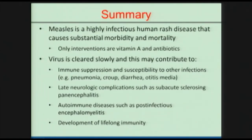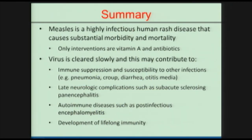In summary, measles is a highly infectious human rash disease that causes substantial morbidity and mortality. The only interventions we have are vitamin A and antibiotics. It's a serious disease in developed countries as well as developing countries. The virus is cleared slowly, and some of the late complications of measles — immune suppression and susceptibility to other infections, late neurologic complications like SSPE, induction of autoimmune diseases like encephalomyelitis — we don't completely understand. But there is also development of lifelong immunity after recovery.